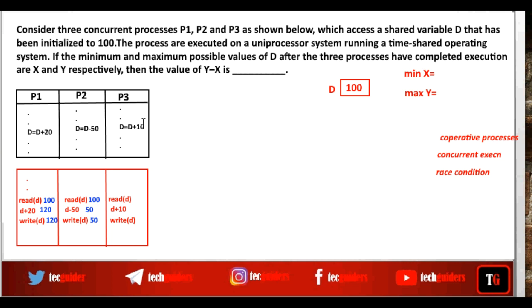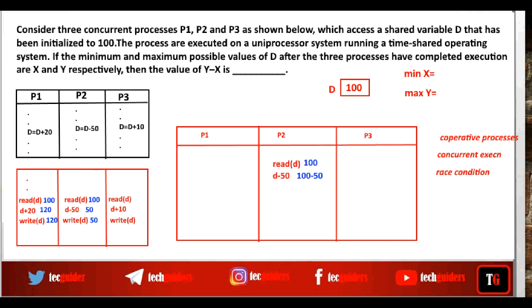For the minimum value, P2 should read d before it is updated by P1 and P3, and then P2 should overwrite the updates made by P1 and P3. For example, P2 reads 100 and subtracts 50, but before writing, the processor is preempted. P1 reads 100, adds 20, and writes 120. Then P3 reads 120, adds 10, and writes 130. Finally, P2 gets the processor again and writes 50 to d.